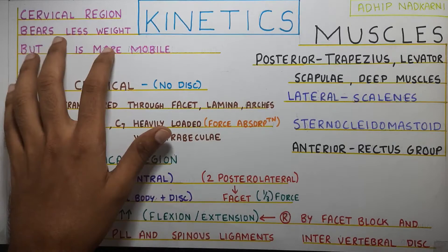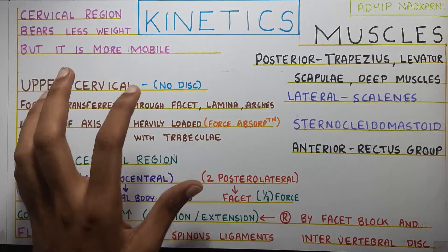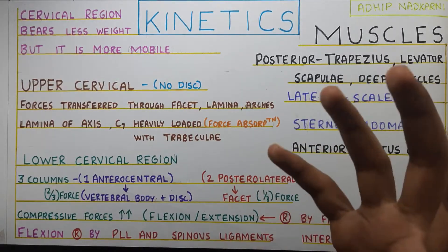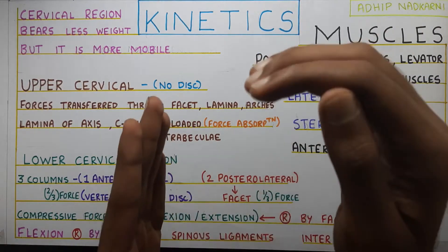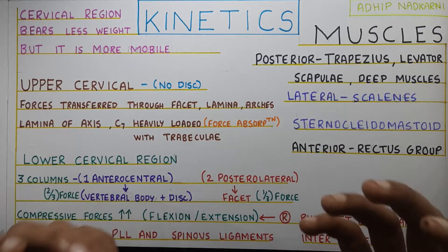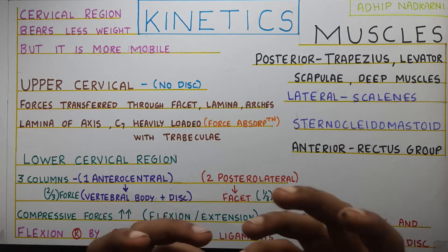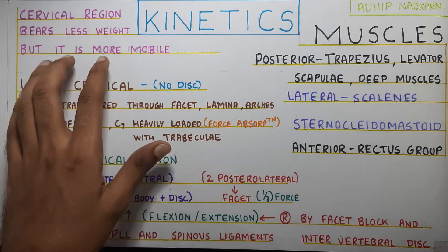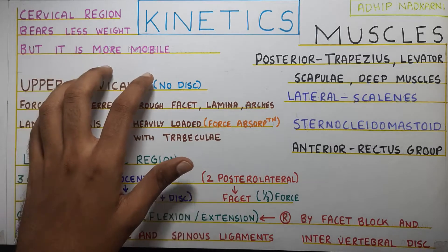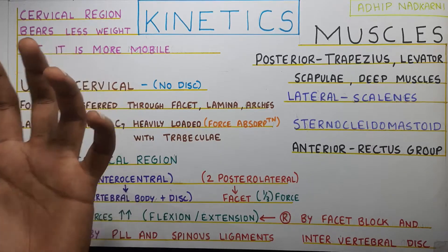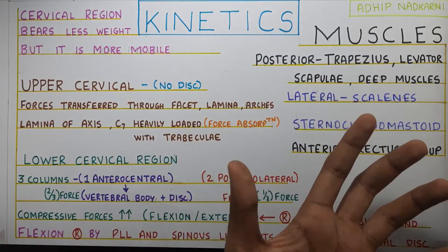The cervical region bears very less weight because there is not much weight coming from the top — it's just the weight of the head that it has to take. But as you go down to the lumbar vertebras, they have to take the weight of your upper limbs, your head, and your trunk. So they bear much more weight compared to the cervical region. But the distinguishing factor of the cervical spine is that it is very mobile.